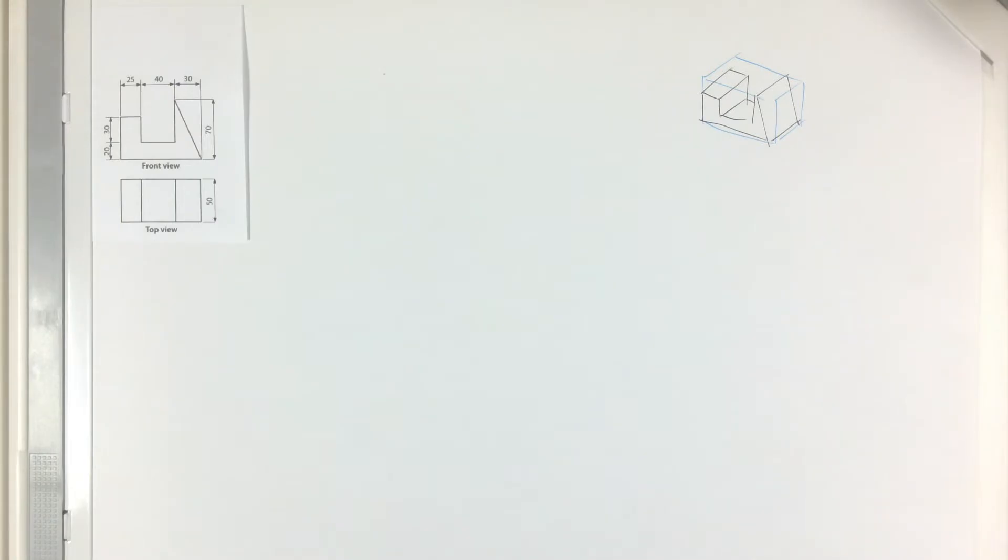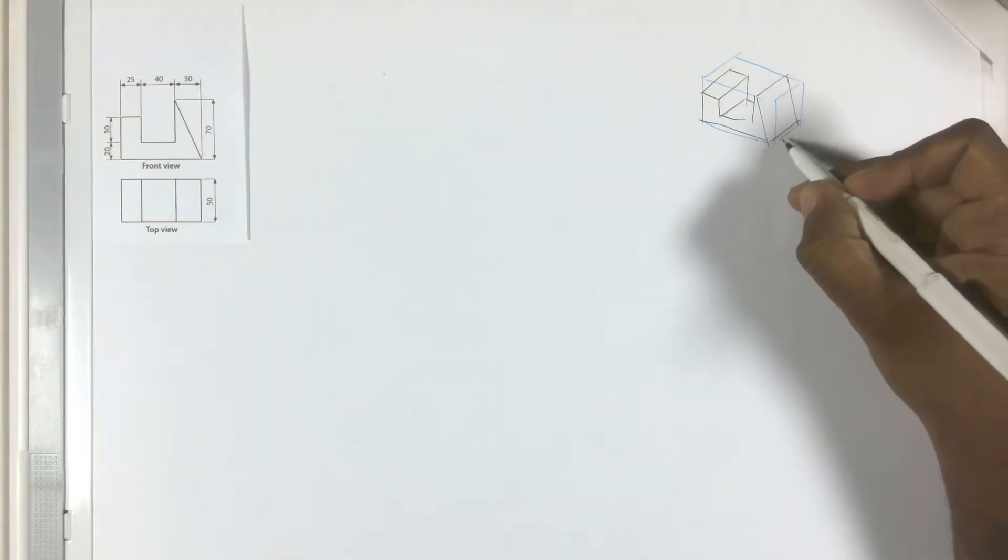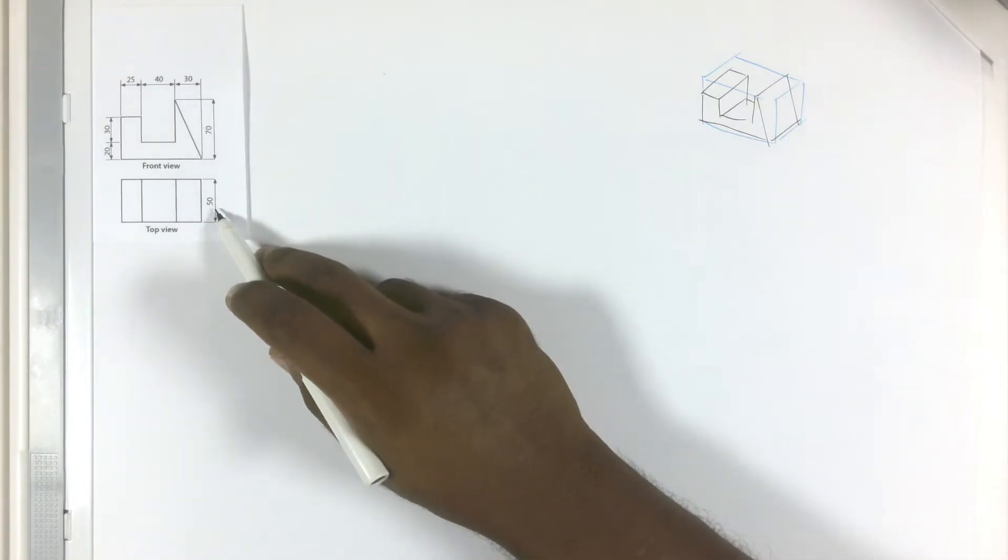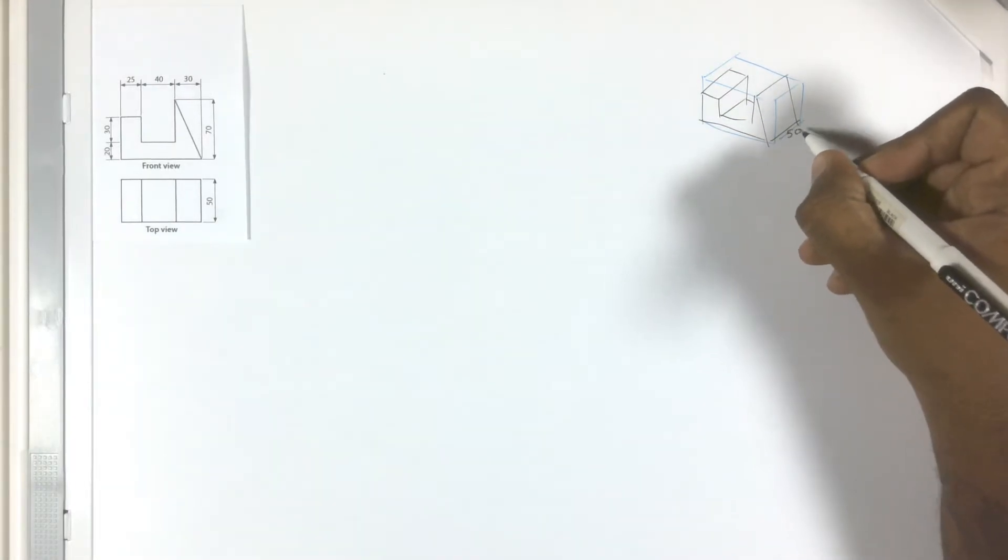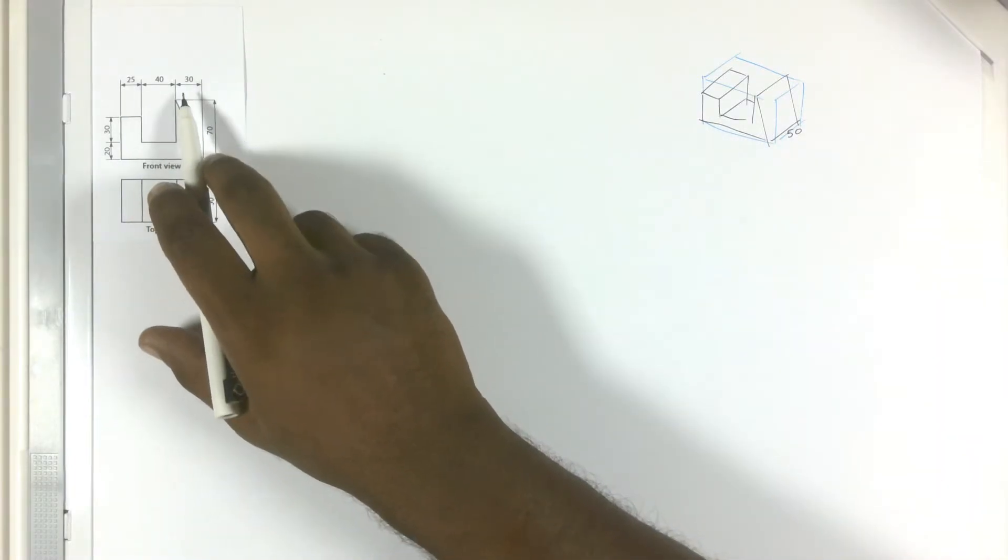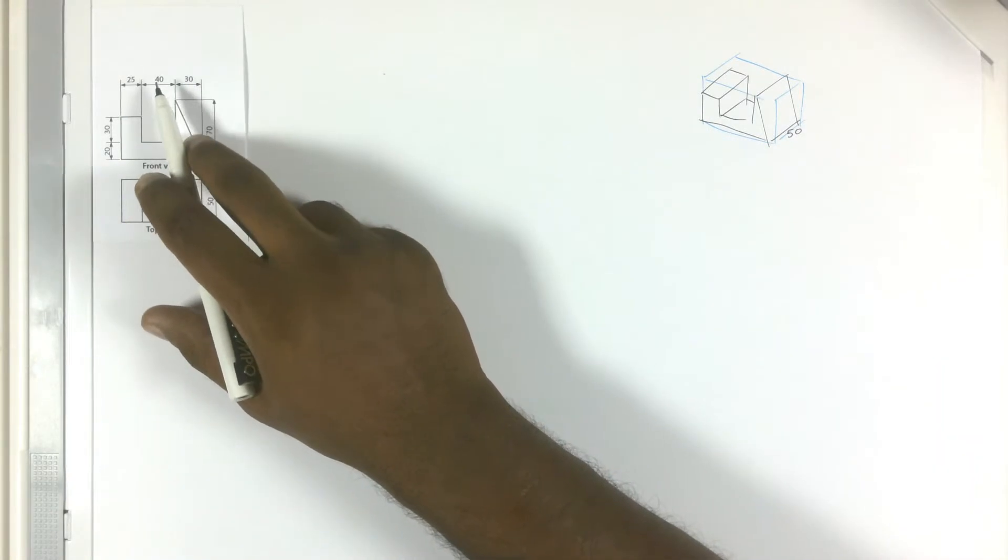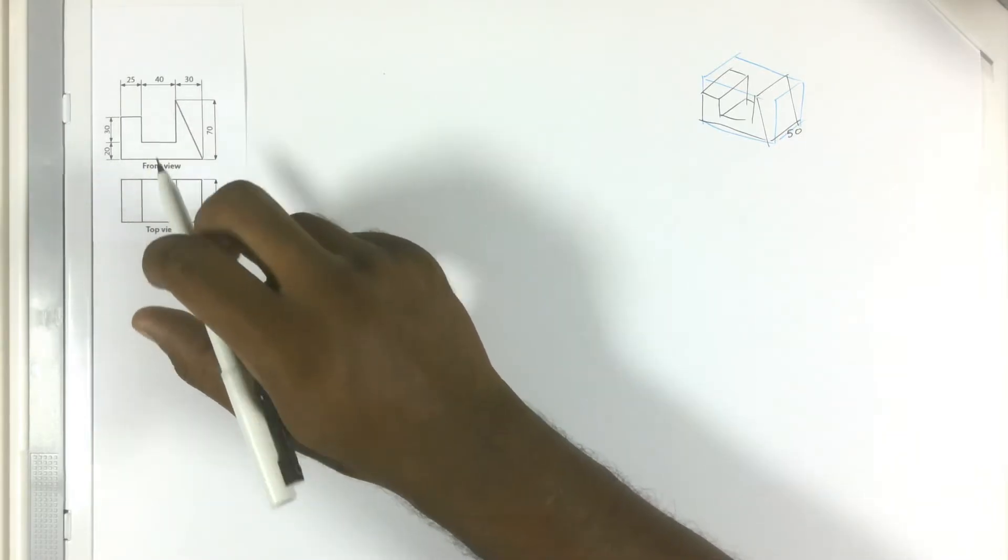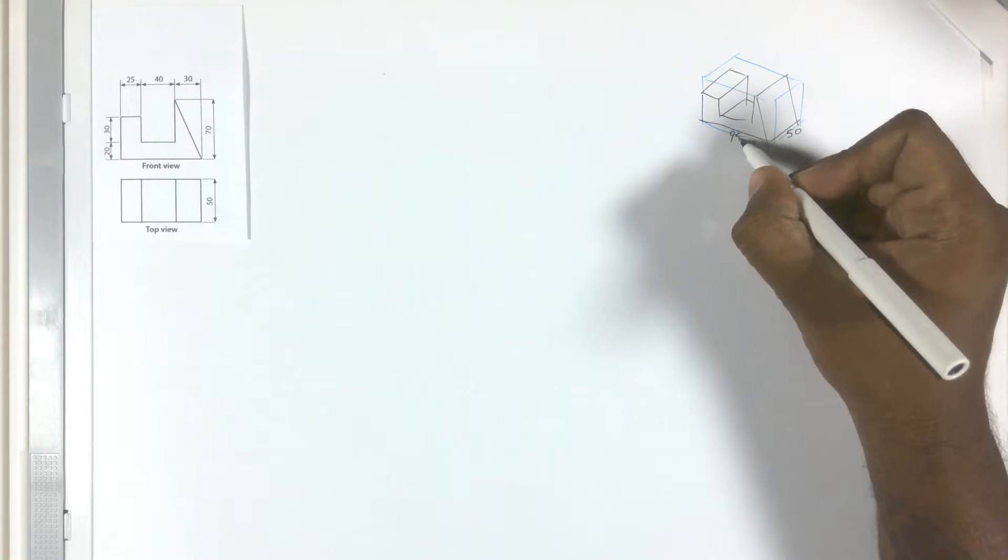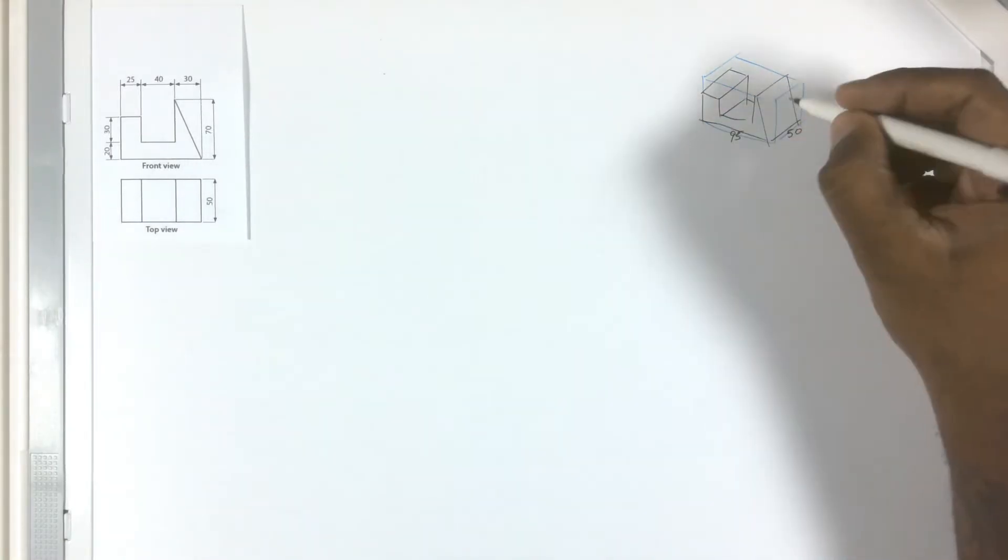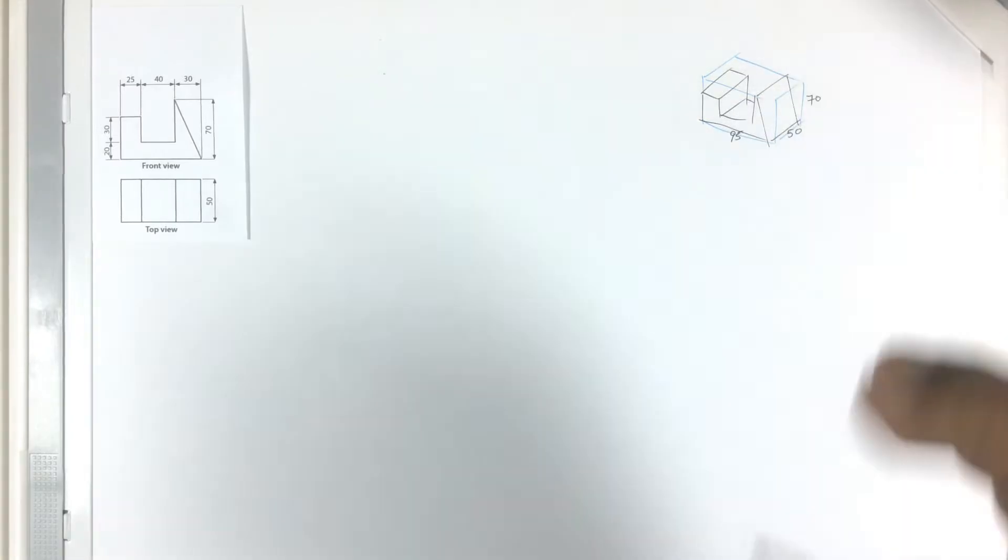Now that I know how my drawing will look like, let me find the dimensions for the crate. The depth is 50, as you can see from the top view it is 50. So depth will be 50. Now for the length of the crate, we will have to add 30 plus 40 plus 25, which makes 95. So let me write 95 here. And for the height, we will get it from the front view, it is 70. So let me write 70 here.